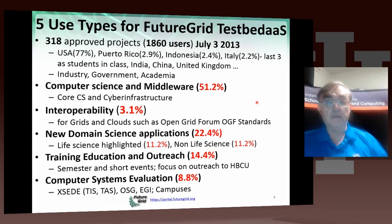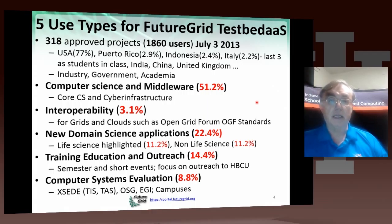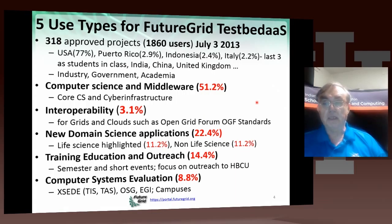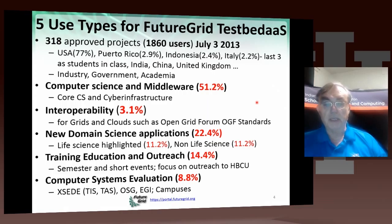The typical usage of FutureGrid is illustrated here. We've had 318 approved projects by July 3rd, and 1,860 users. Those users are dominant in the USA, but especially when we've had classes, we have significant users from other countries. Of those projects, 51% are from computer science or middleware, 3% interoperability, and 22% in domain science — half of those in life science, half in non-life science areas.